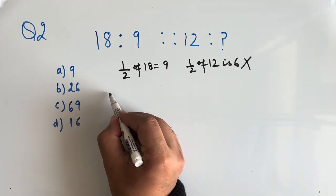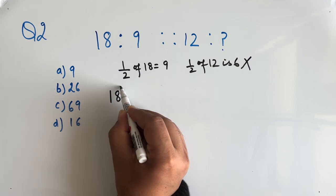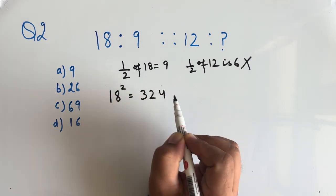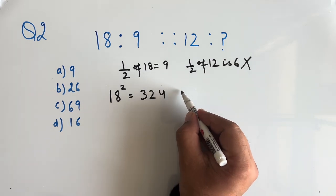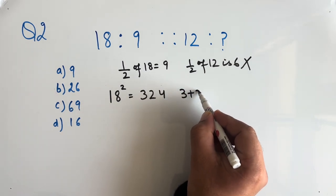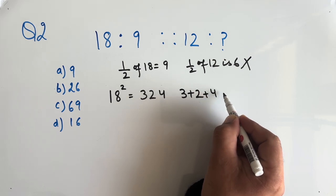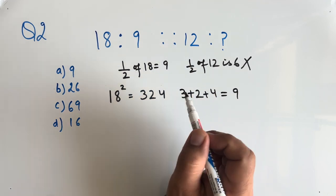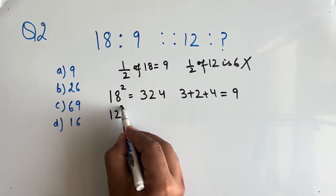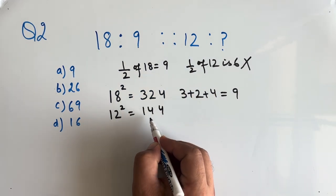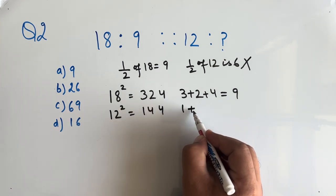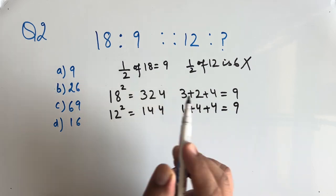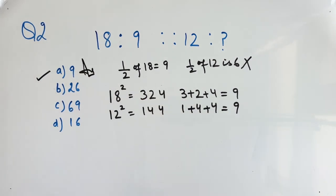Now let us try another way. 18 squared is 324, and now if we do the sum of digits, that is 3 plus 2 plus 4, we get 9. So let us apply the same logic with 12. 12 squared is 144, now if we add the digits 1 plus 4 plus 4 is 9. So option A, 9 is the correct answer.